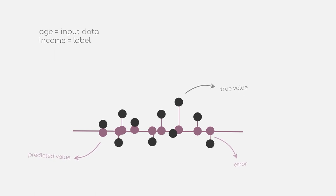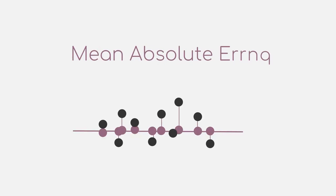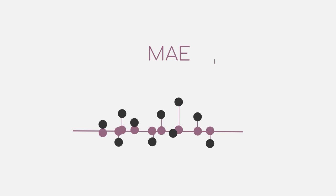The first and simplest metric we will look at is the mean absolute error. As the name already suggests, instead of taking the errors as they are, we will compute the absolute values of them, and then calculate the mean.